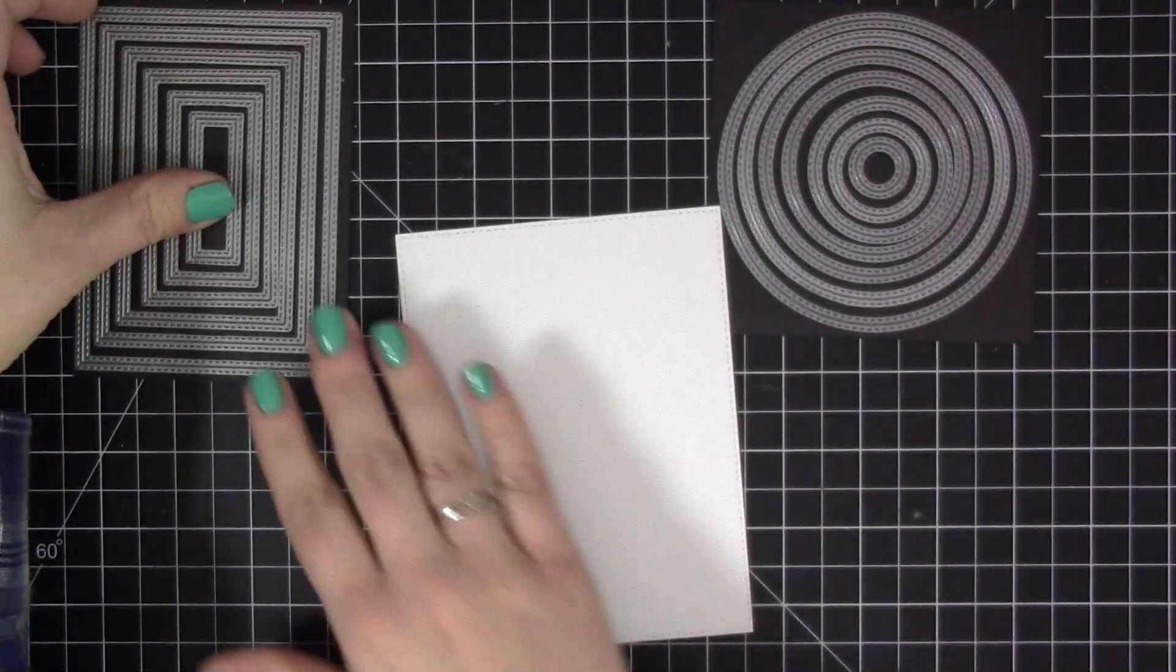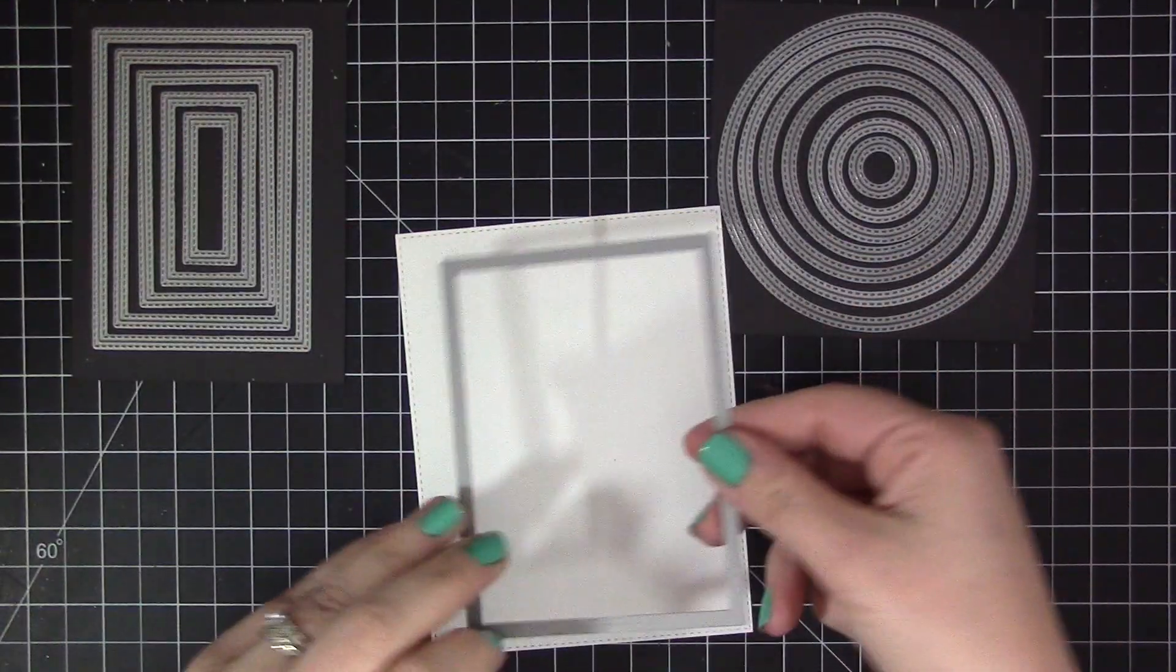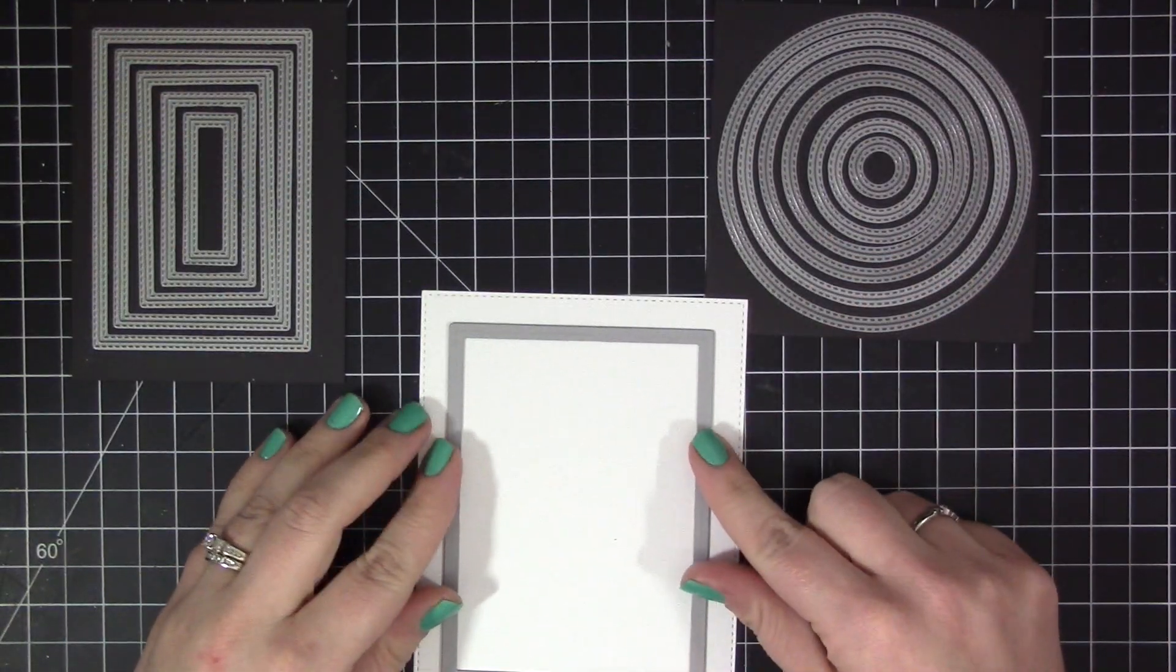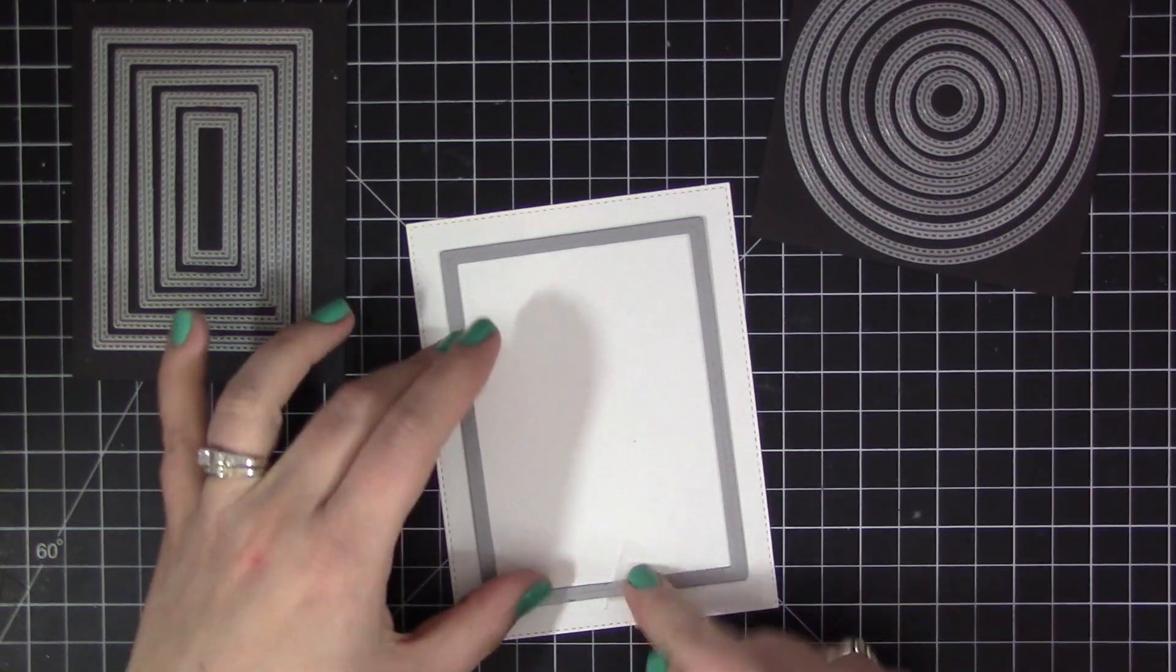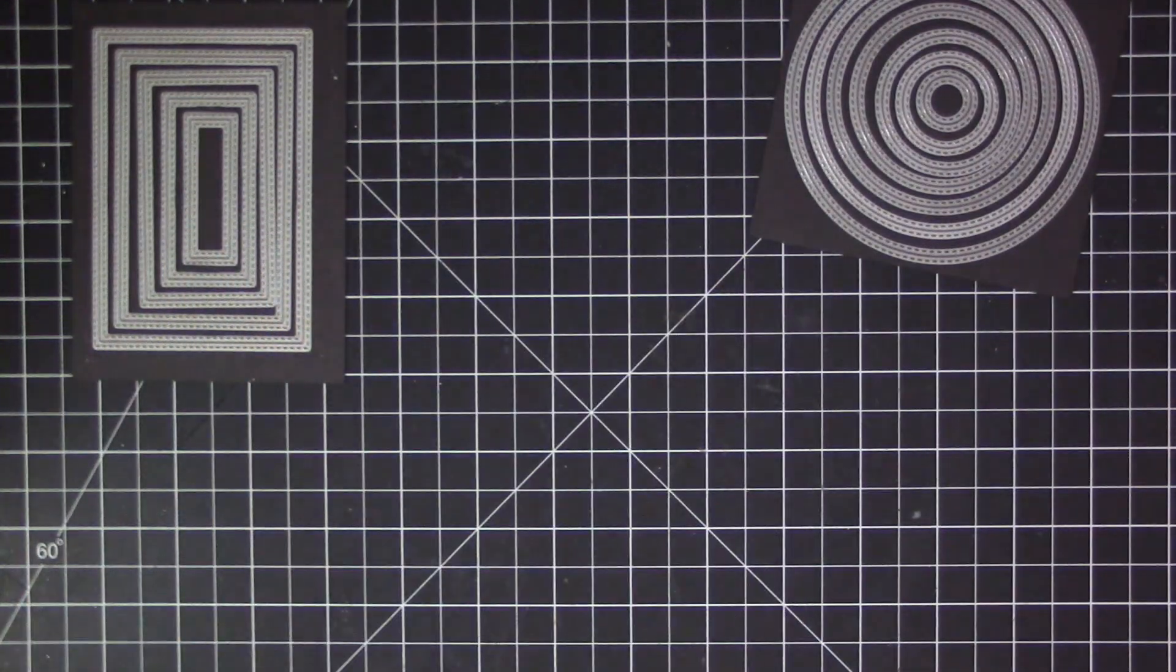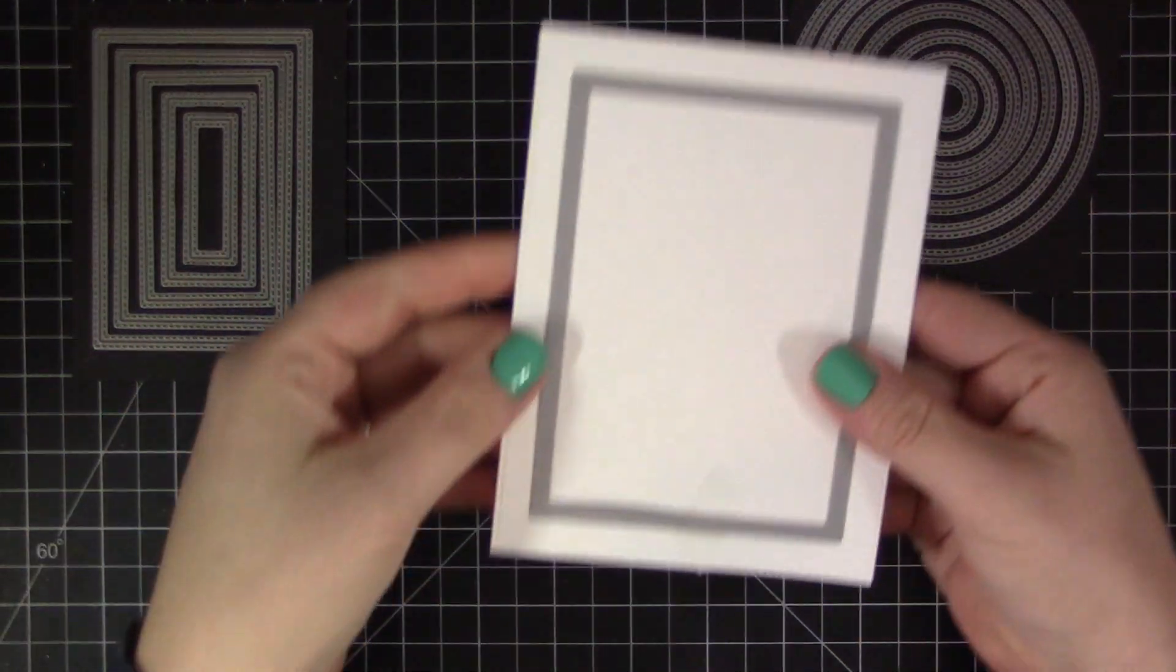I'm starting with this white cardstock panel I already die cut with a stitched rectangle die from one of the blueprint sets. Now I'm going to take the largest of the Inside and Out Stitched Rectangle Stacks dies and position it right in the center of that piece. I used a little piece of tape just to make sure it didn't shift.